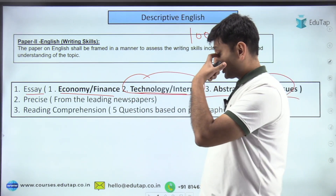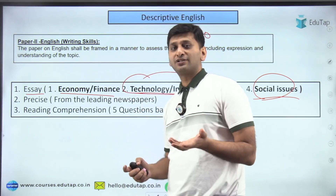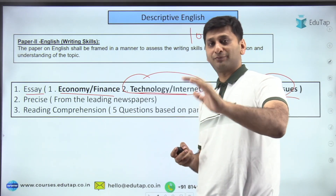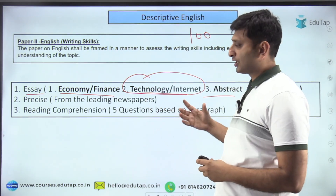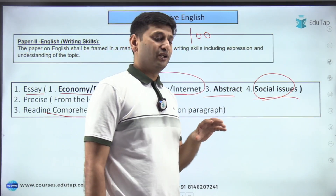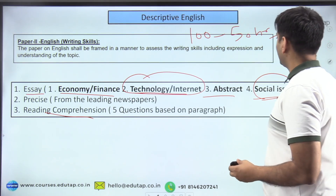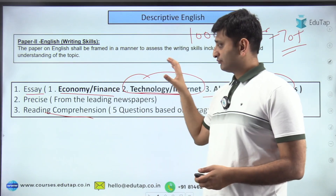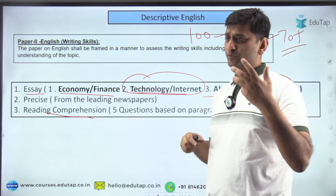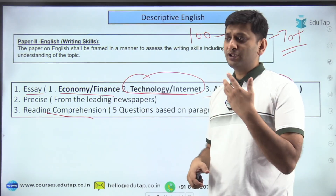You can score 70-plus marks in English with just about 50 hours of dedicated preparation. The most scoring section with the least effort. Read newspapers daily — take any editorial, try to write an essay on it, or summarize it as a precis. Doing this consistently will improve both your content and writing skills.